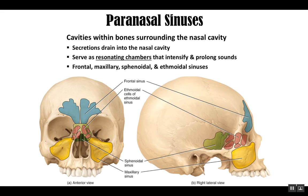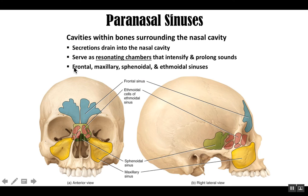This slide shows the paranasal sinuses and their locations. The functions of paranasal sinuses include production of secretions that drain into the nasal cavity, serving as resonating chambers to intensify and prolong sounds from the vocal cords, and making the skull much lighter than it would be if these were solid bones. The bones that have paranasal sinuses are the frontal, maxillary, sphenoid, and ethmoid.